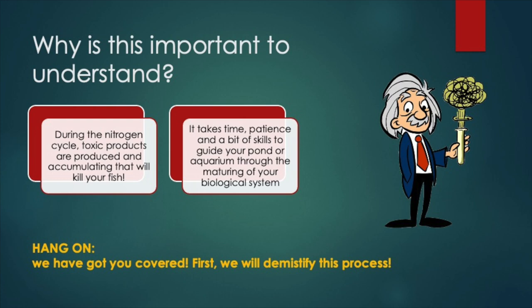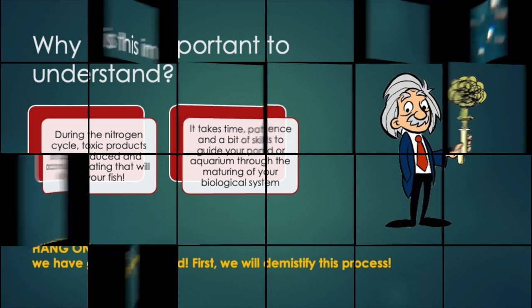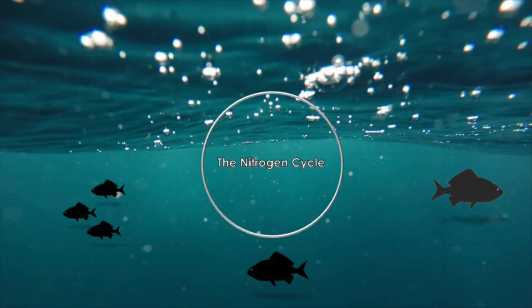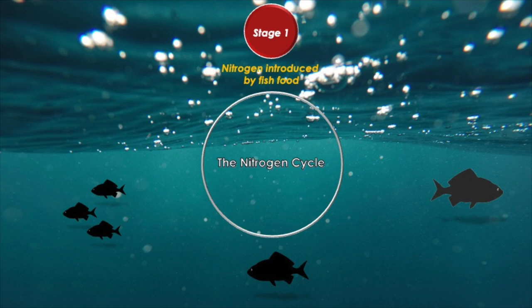This all may sound a bit difficult, but once you know what is happening you are already there. So stay tuned, we have got you covered. Let's first have a look at what this nitrogen cycle actually is. To get things started, a catalyst is needed that starts off the cycle. In our aquaria and ponds it all starts with us — we feed our fish, and it is this food that fuels the nitrogen cycle.